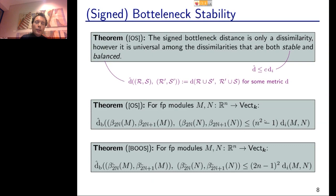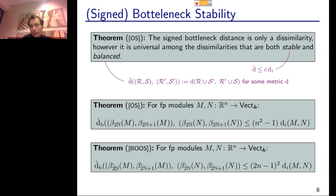The second stability result concerns the rank exact structure — the relative multigraded Betti numbers with projectives being hook modules. The signed bottleneck distance between the relative multigraded Betti numbers of M and N is bounded above by another quantity times the interleaving distance, growing at approximately the same rate. So: if your invariant is the Hilbert function, use the usual exact structure and usual multigraded Betti numbers; if you want to work with the rank invariant, use the rank exact structure with hook projectives.